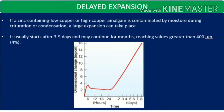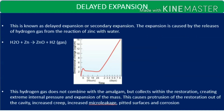Moving on to delayed expansion, which is very important. Delayed expansion basically occurs in zinc-containing alloys — whether zinc-containing low copper or high copper. When contaminated by moisture during trituration or condensation, a large expansion can take place. It usually starts after three to five days and can continue for months, reaching values greater than 400 micrometers, that is greater than four percent. It is called delayed expansion because it starts three to five days later.